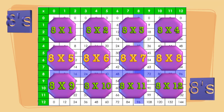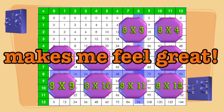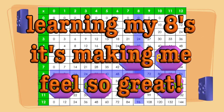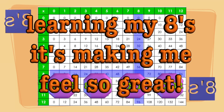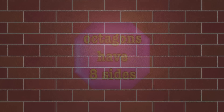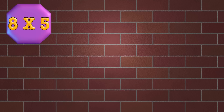Those 8 times tables, I can't wait! Learning 8s makes me feel great. I'm learning my 8s, it's making me feel so great. Octagons have 8 sides, so if you have 5 octagons, you have 8 times 5.